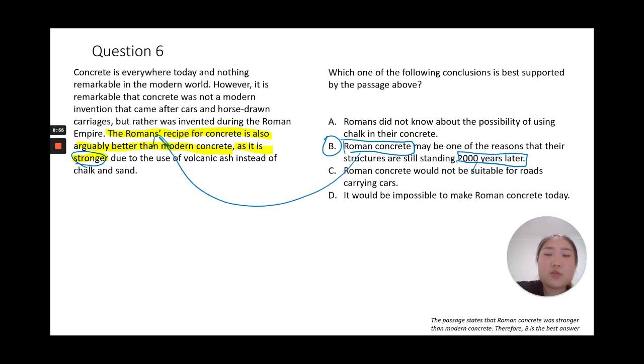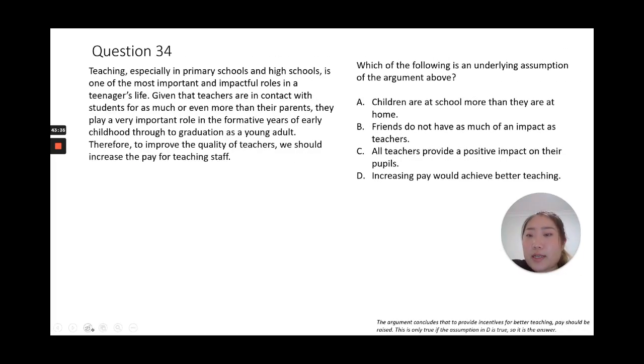Question 34: what is an underlying assumption of this passage? First of all, what is the argument? Remember this word 'therefore': to improve the quality of teachers, we should increase the pay for teaching staff.